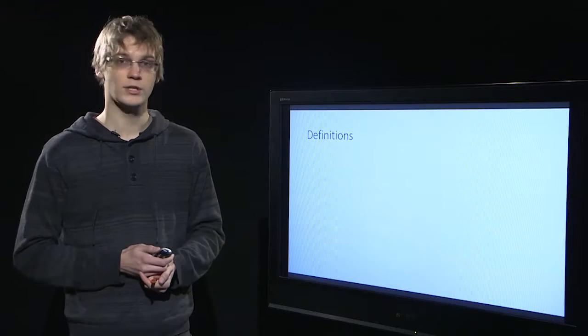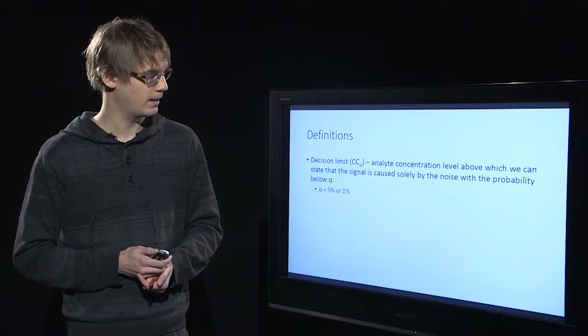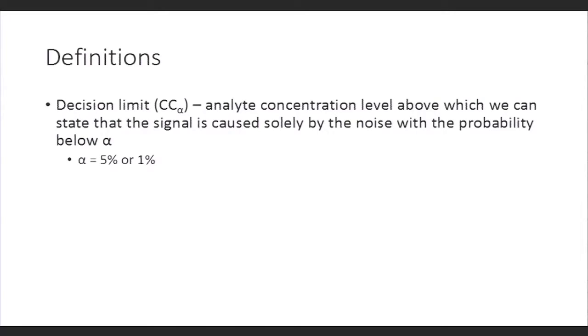Let's look at the definitions more precisely. Decision limit is the analyte concentration level above which we can state that the signal is caused only by the noise with a probability below alpha. Alpha is usually defined as a low percentage like 5 or 1%.